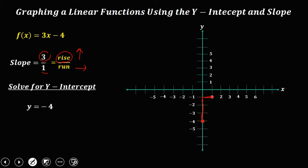Then another upward 3 — counting 1, 2, 3. Then the run is 1. So this is the other coordinate. Therefore, this is the graph of this function.